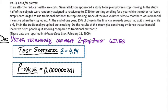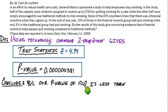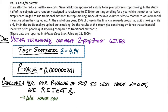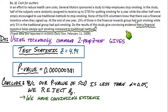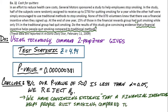Using that P-value in the conclude step: because our P-value, which is approximately zero (0.0000381), is definitely less than our alpha level of 0.05, we reject the null hypothesis. In context, that means we have convincing evidence that a financial incentive actually helps people quit smoking as compared to traditional methods. We support the alternative hypothesis because our P-value is so small.